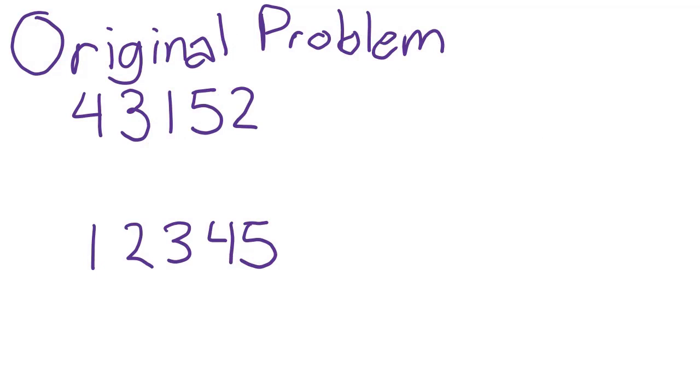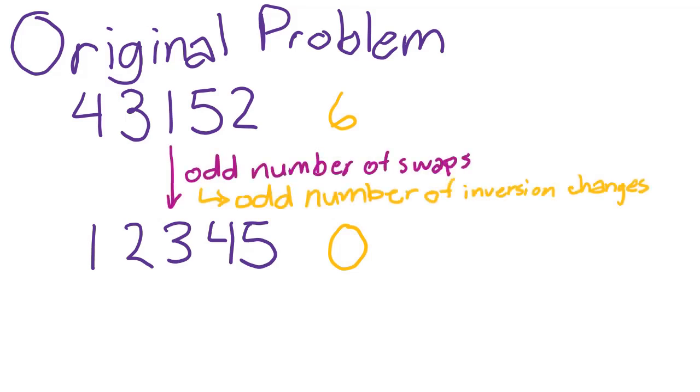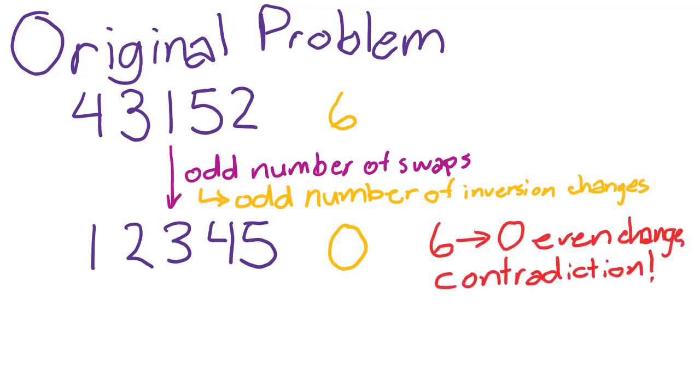Counting the number of inversions at the start and at the end, we come up with 6 and 0. If we were to use an odd number of swaps, then since each swap changes the number of inversions by an odd amount, at the end of the process, the number of inversions overall should be odd. But to get from 6 to 0, we need the number of inversions to change by an even amount. So that makes this impossible. We can't change the number of inversions by an even amount using an odd number of swaps.